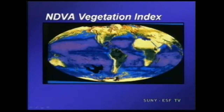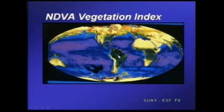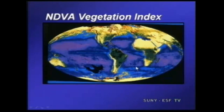This is called an NDVI vegetation index, from satellite data that measures chlorophyll. You can see where the regions of greatest production are — often in the tropics. Some areas are very constrained, like desert regions, by water; some are constrained by temperature; and others by sunlight. We'll get into individual biomes and some of the restrictions on them in just a bit.